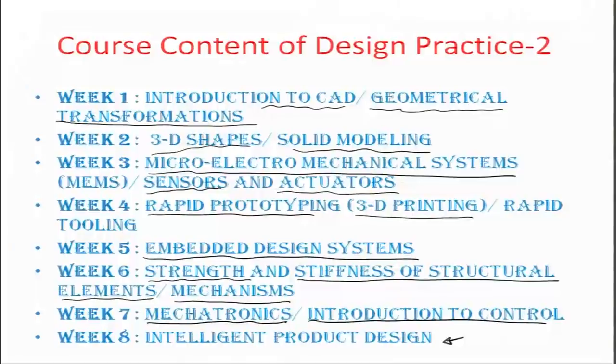And then finally, in intelligent product design, we will probably have some cases and do studies about what these products would look like with the learning that we have. When we look at today's scenario of the industrial ecosystem prevalent around the country, there is a very fundamental question about what competitiveness is influenced by, or how we can see the change in dimension with respect to competition between various stakeholders in this ecosystem.